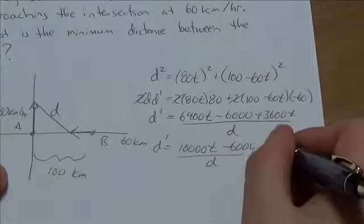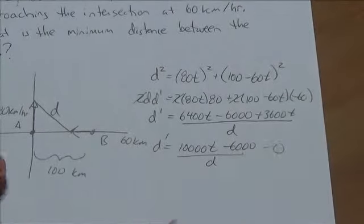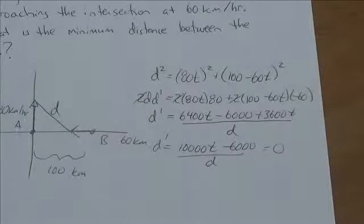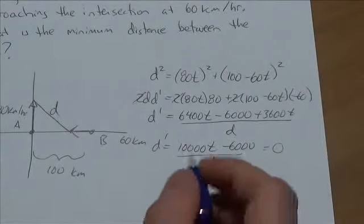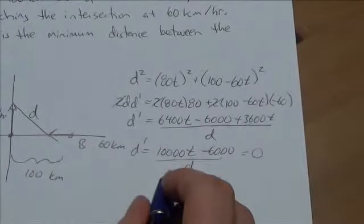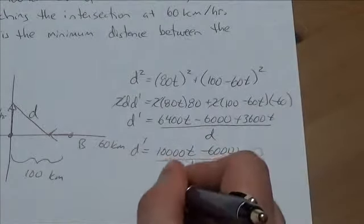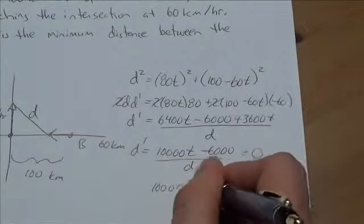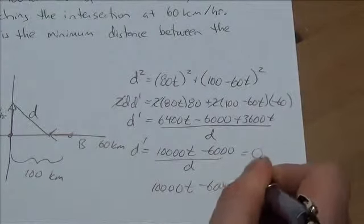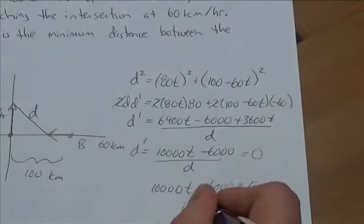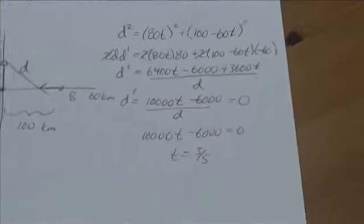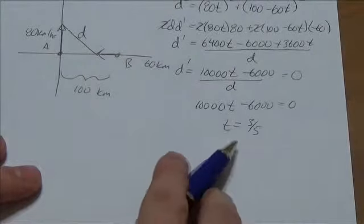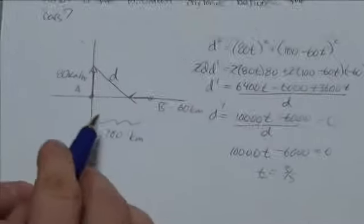Then we multiply through by the D. That's why I didn't do this in terms of a square root, because I knew that D was going to disappear anyway. So now to solve for t, it's going to be 10000t - 6000 = 0. And if you solve for t here, you get that t = 3/5. So in other words, in three-fifths of an hour, the distance between these two vehicles will be a minimum.